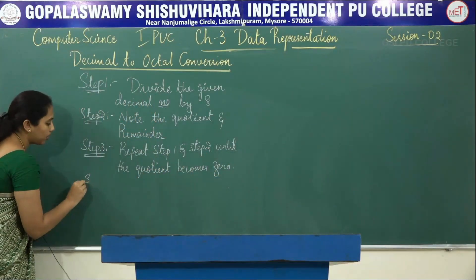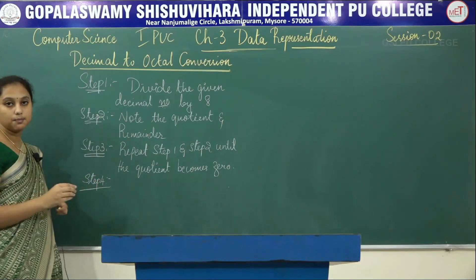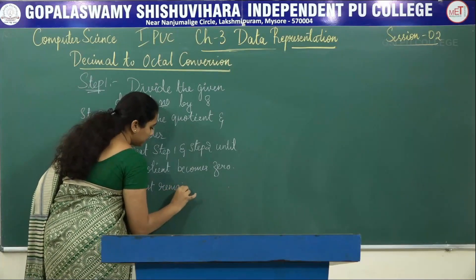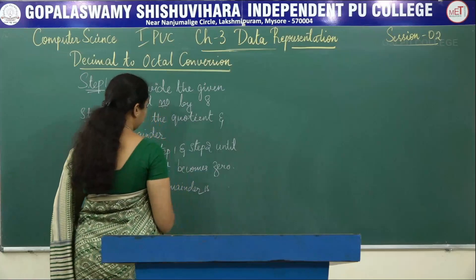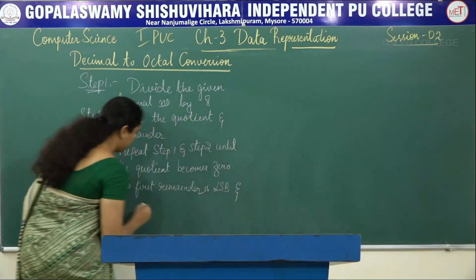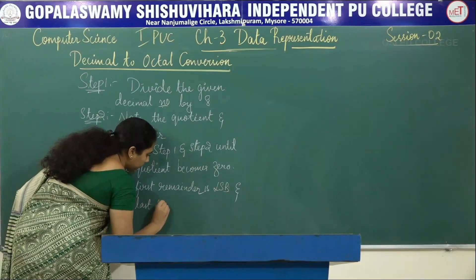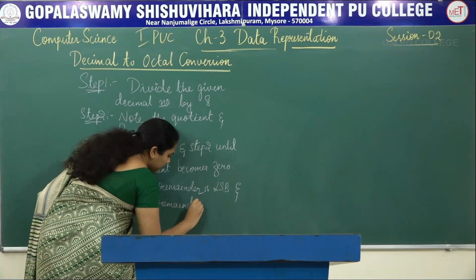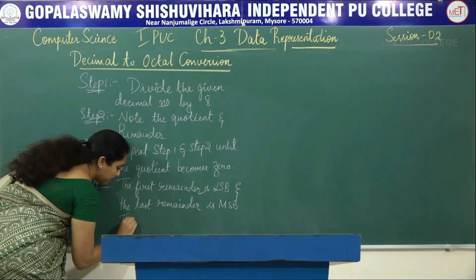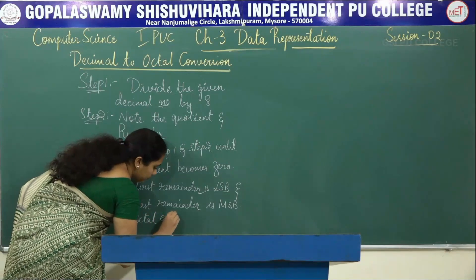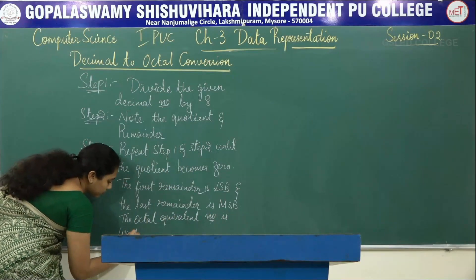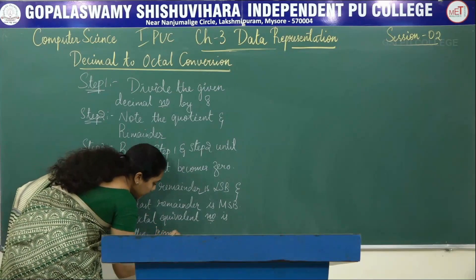Step 4: the first remainder is the LSB and the last remainder is the MSB. The octal equivalent number is written from MSB to LSB.